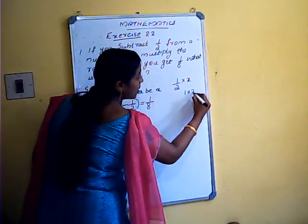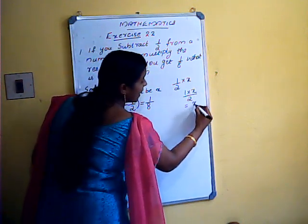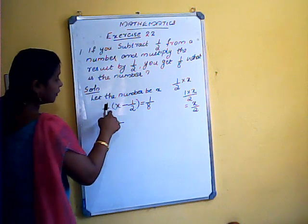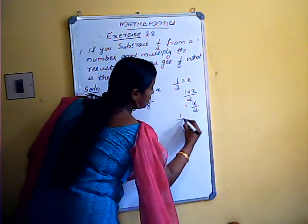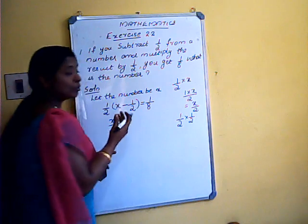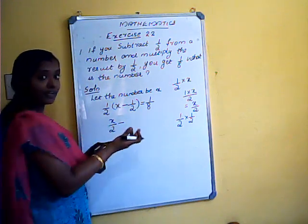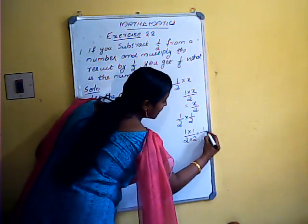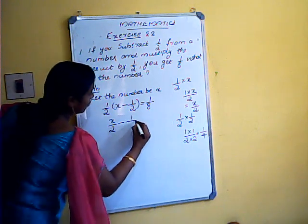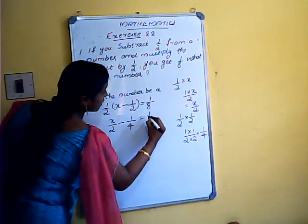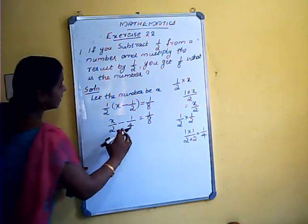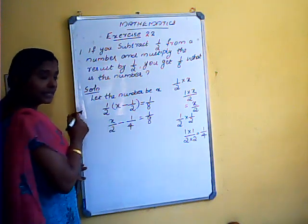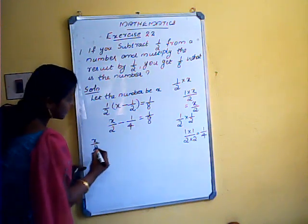To solve this, we first apply the distributive law. 1/2 into x gives x/2. Then 1/2 into 1/2 — to multiply two rationals, we multiply numerators and denominators separately: 1×1 over 2×2 gives 1/4. So we get x/2 minus 1/4 equals 1/8.